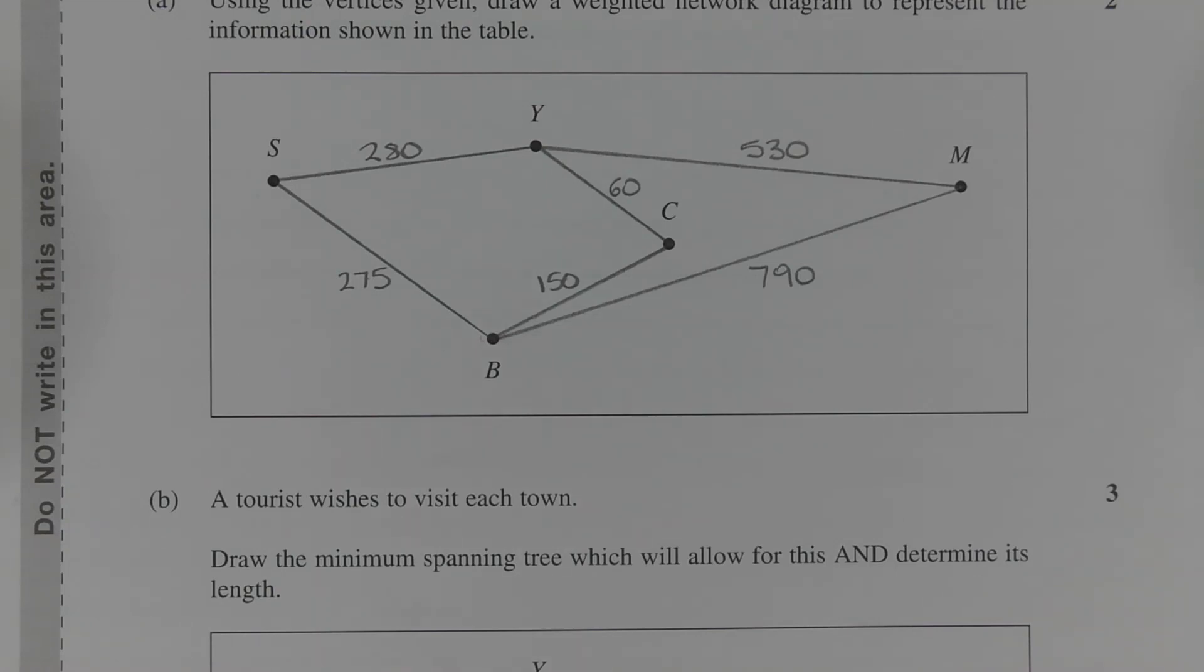The first edge to select in this case is edge CY with weight 60, then edge CB with weight 150, then edge BS with weight 275. Now note that by selecting edge SY, we create a cycle, so edge SY cannot be included. So the next edge to select is edge YM with weight 530, and that completes the minimum spanning tree.